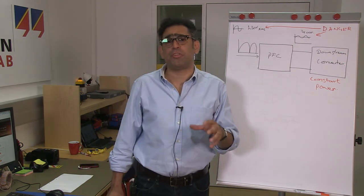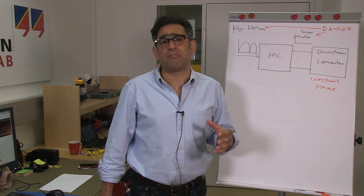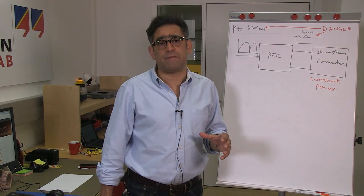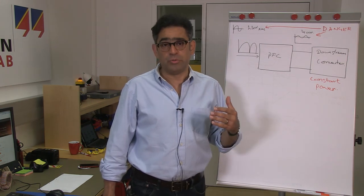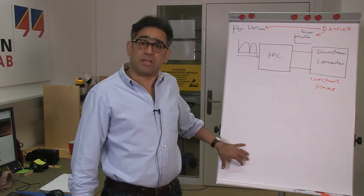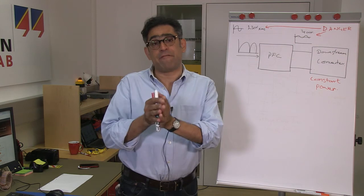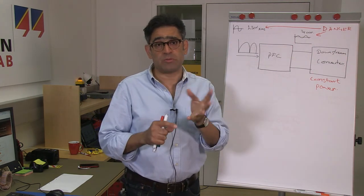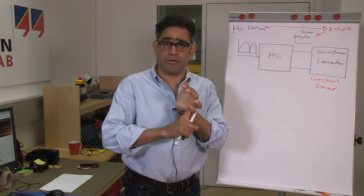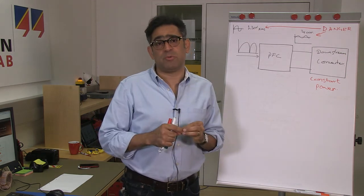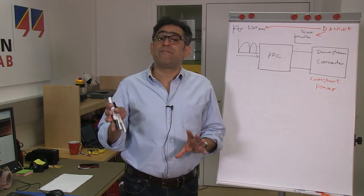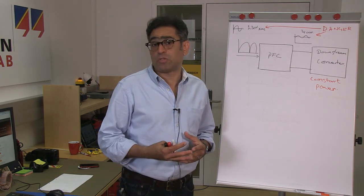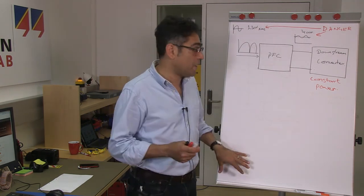A power factor correction unit that we're going to measure is one of the most popular ones that is around, and that is a continuous conduction mode boost converter. When running, it will run in average current mode, so we have two loops. We've got a voltage loop and a current loop, and in this video we're going to be measuring the voltage loop. Now please note that the voltage loop is very, very slow. Typically the crossover of the voltage loop is about 5 to 10 Hertz.